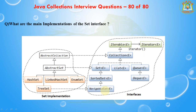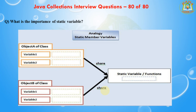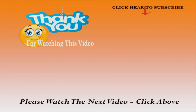The next question is what is the importance of a static variable? Static variables are class-level variables where all objects of the class refer to the same variable. If one object changes the value, the change gets reflected in all objects. A static method is also applicable at the class level only.